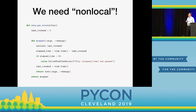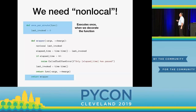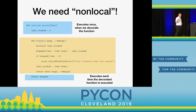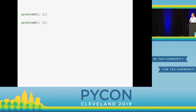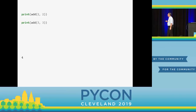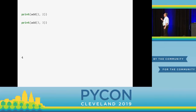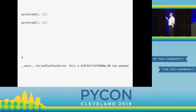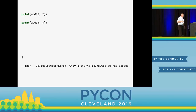I need nonlocal because last_invoked only runs once in the outer function, whereas the inner logic runs again and again each time we call our function. Does this work? We say add(2, 2) — that's four. Then if I say add(3, 3), I get a 'called too often' error because only four seconds have passed. Pretty great.